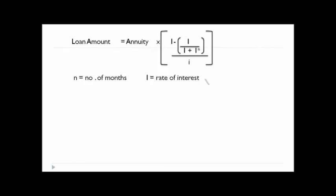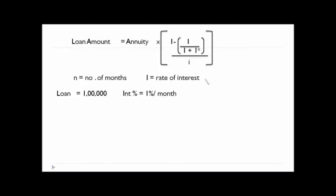We will take an example. Before that, what does this n convey? n conveys the number of months and i conveys the rate of interest. Let's say you have a loan of 1 lakh and the interest is 1 percent per month or 12 percent per annum.